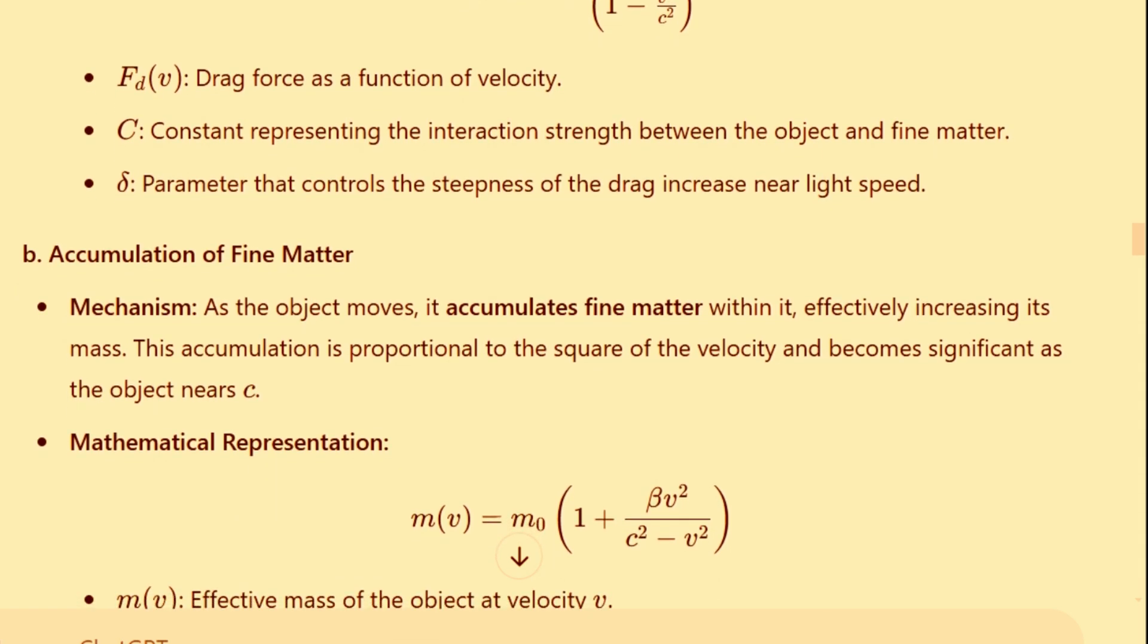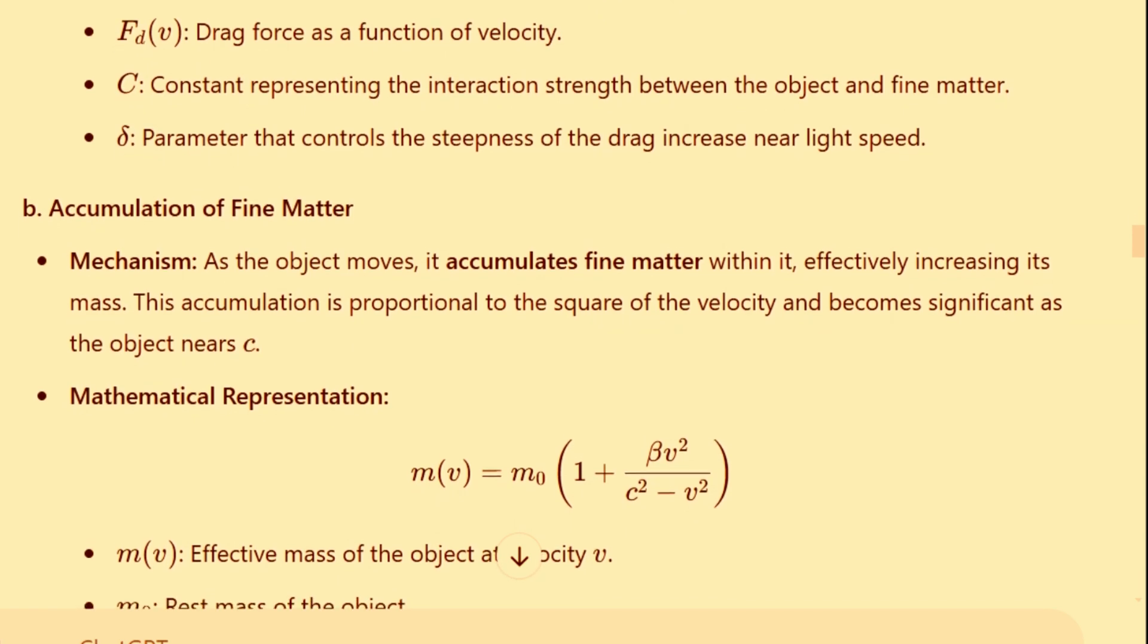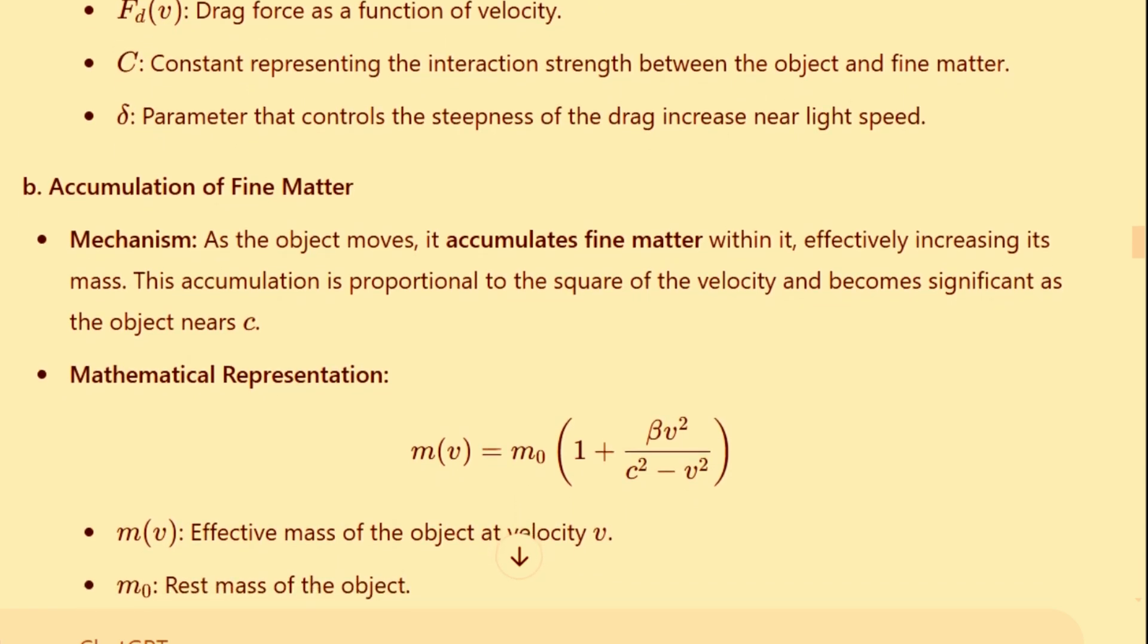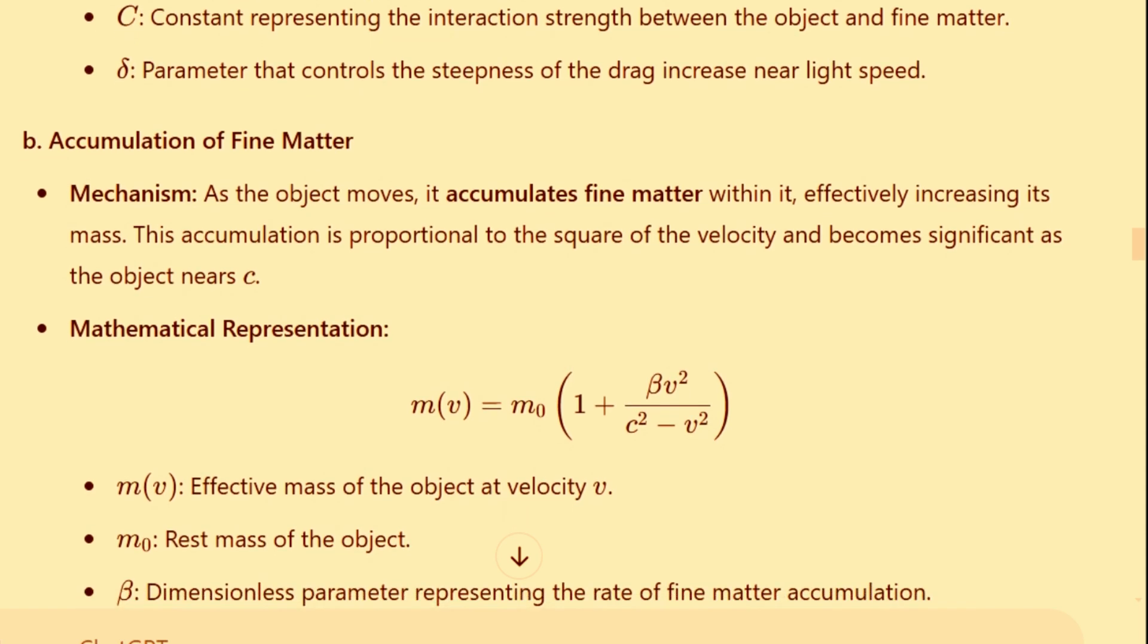Here, F sub d of v represents the drag force as a function of velocity, capital C is a constant representing the interaction strength between the object and fine matter, and delta is a parameter that controls the steepness of the drag increase near light speed.